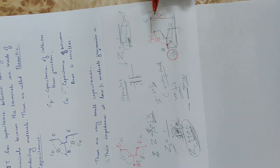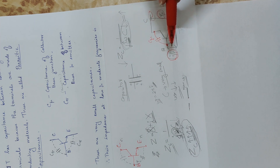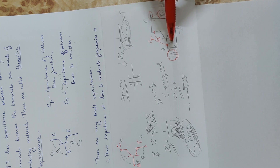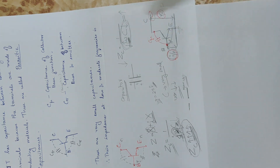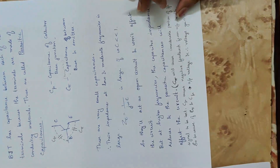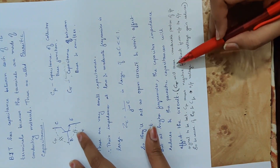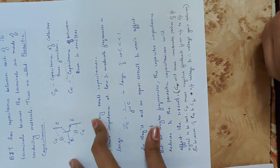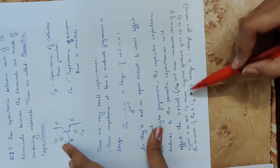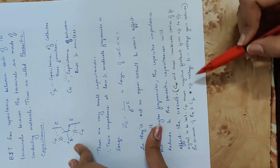Cμ, the collector-base parasitic capacitance, adds a feedback path from output to input. This feedback is negative in nature — the output voltage feeds back to the input, reducing the effective input. This is another effect of parasitic capacitance in BJT at high frequency.